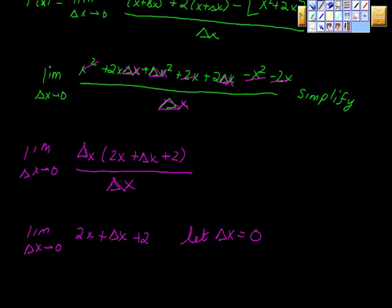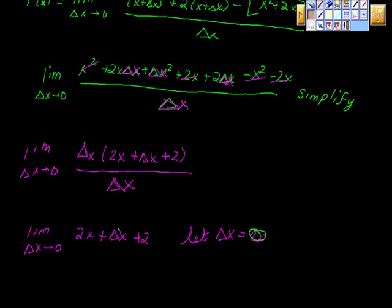If we let this thing go to 0, change of x is 0. Well, what would that do to us? We'd say here, change of x is 0, and we'd have 2x + 0 + 2, and that is certainly defined, isn't it?